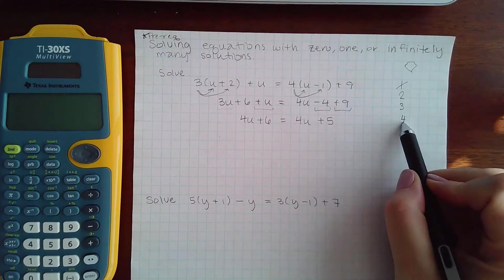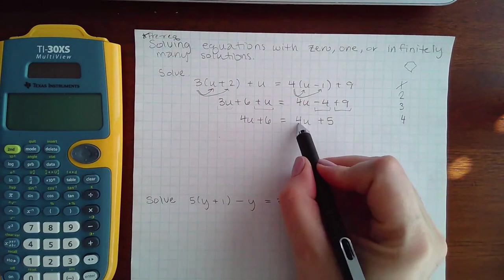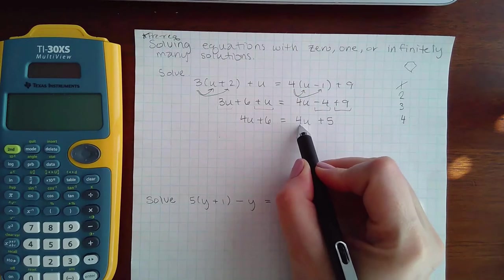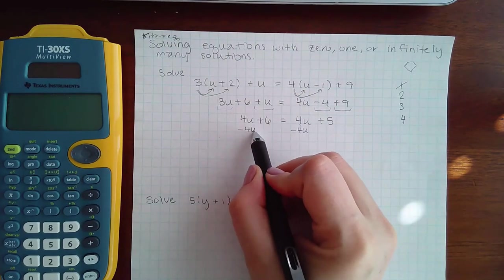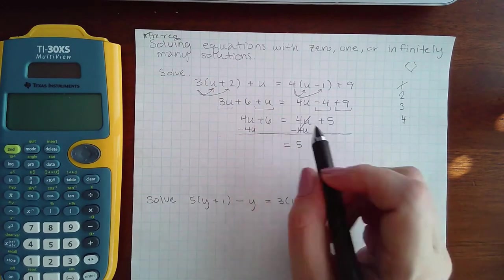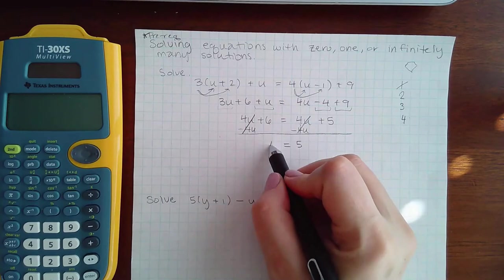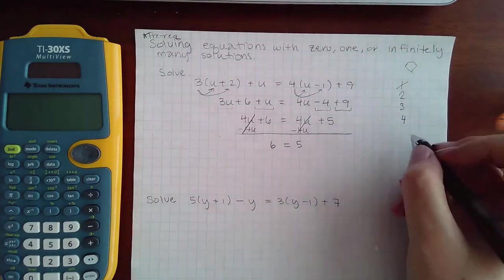Step four is to move all your variables to one side. I like to move my variables to the left, so I'm going to minus 4u on both sides. It cancels here leaving me with just 6, but it also cancels on the right hand side leaving me with just positive 5.